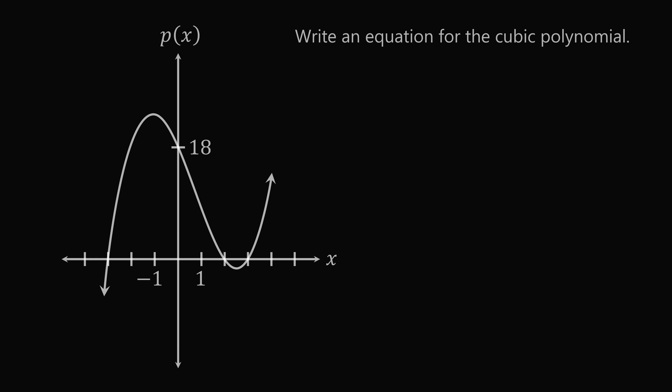Let's solve each question in turn. We want to write an equation for the cubic polynomial. To do that, we'll identify the x-intercepts of the graph, then write a linear factor for each of the intercepts, and multiply them all together to find the scaling factor of the polynomial.